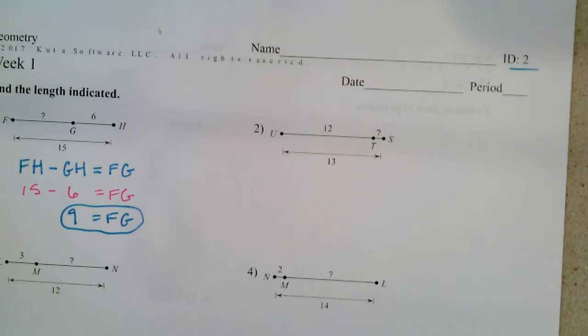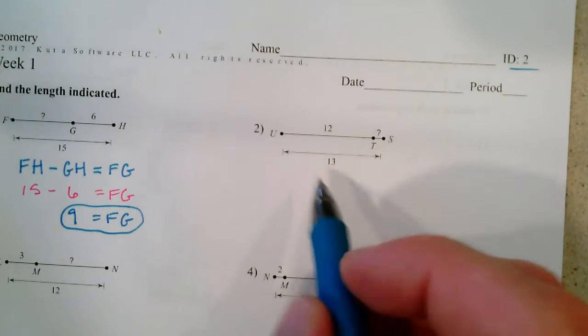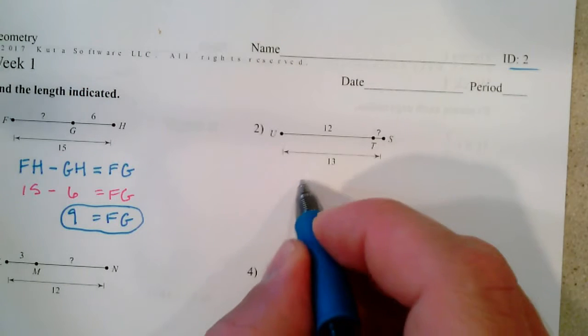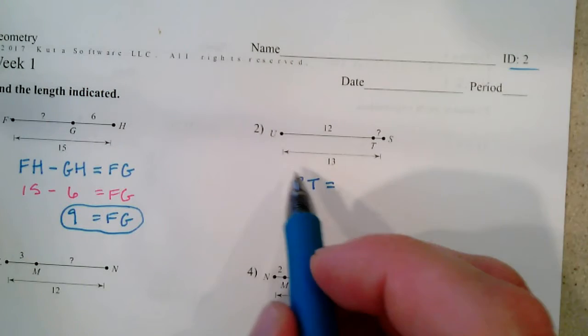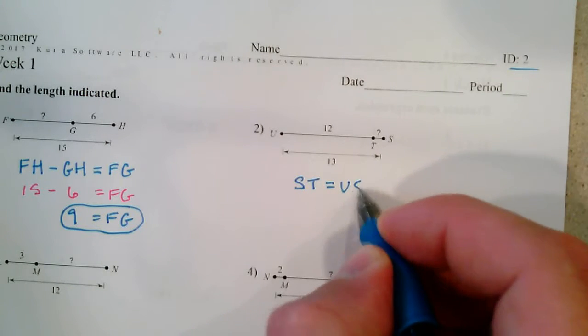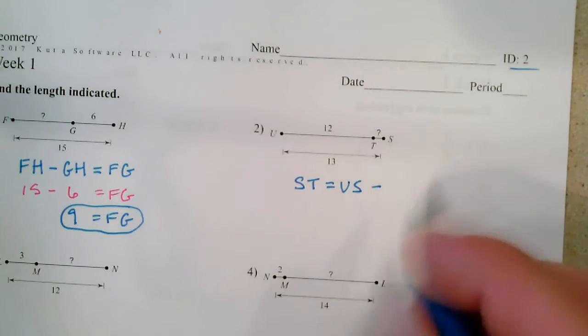Next door here, we're trying to find this little bit. So ST is equal to the whole length US take away UT.